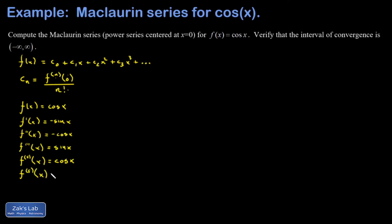Then I have to evaluate all these at zero. So f(0) is one because the cosine of zero is one. f'(0) is zero because the sine of zero is zero. f''(0) is negative one and so on. I'm seeing a nice alternating pattern here.